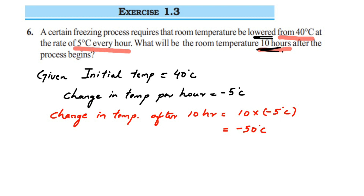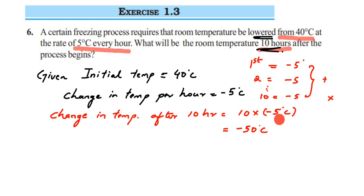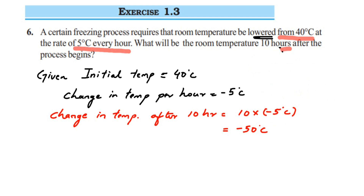In these 10 hours, the temperature is lowered by minus 50 degrees Celsius. Instead of subtracting minus 5 every hour — first hour minus 5, second hour minus 5, third hour minus 5, and so on up to 10 hours — we first add minus 5 ten times and then subtract. Instead of that, we are multiplying. So 10 into minus 5 is minus 50 degrees Celsius, meaning the total temperature decreased is minus 50.